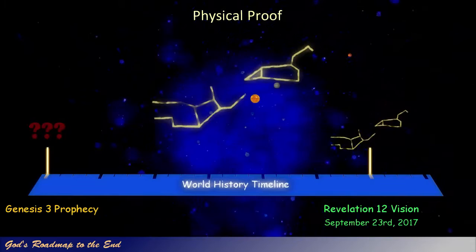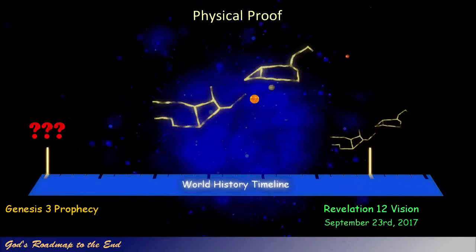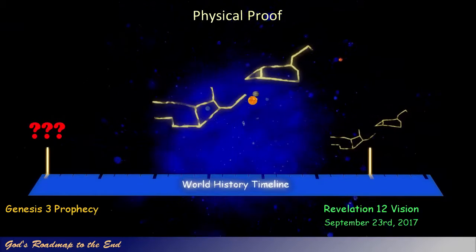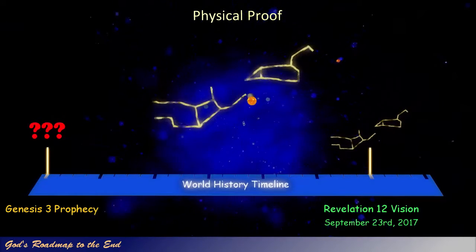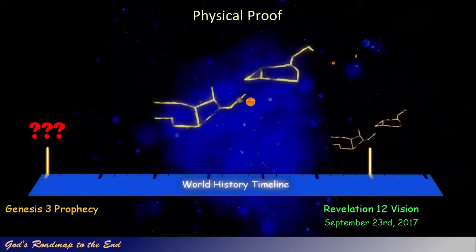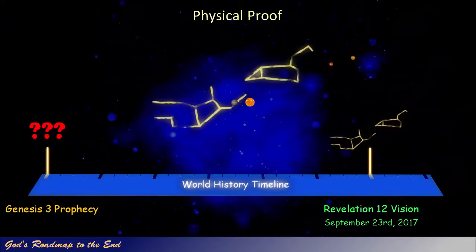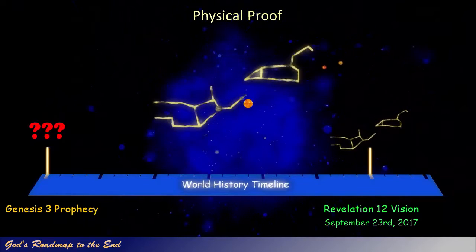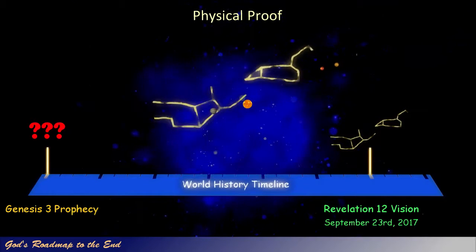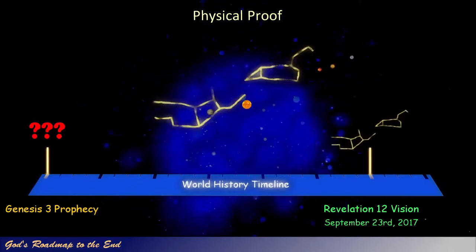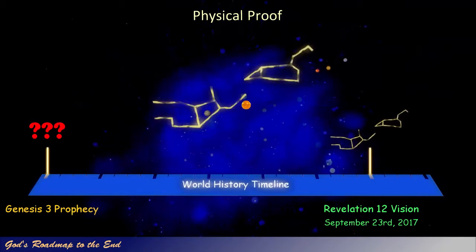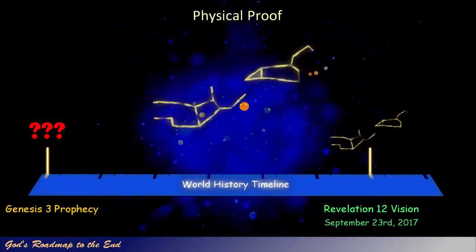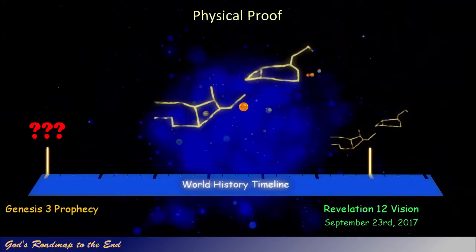The celestial representation and progression of stars and planets associated with the Revelation 12 sign are very complex and unique, and require a number of events in the heavens to succeed each other perfectly in order to arrive at the result as described in Revelation 12.